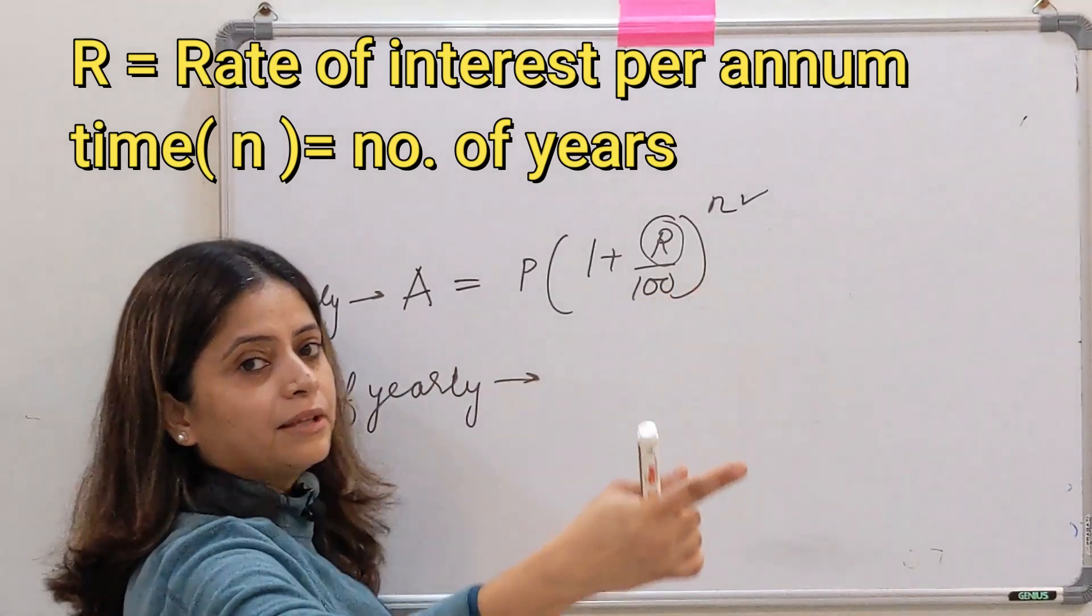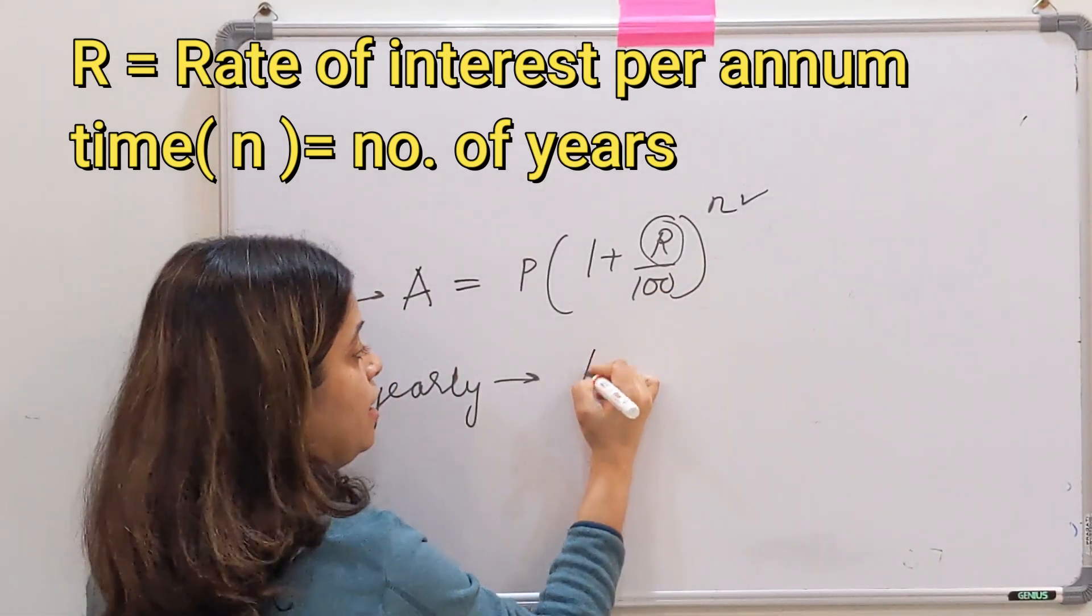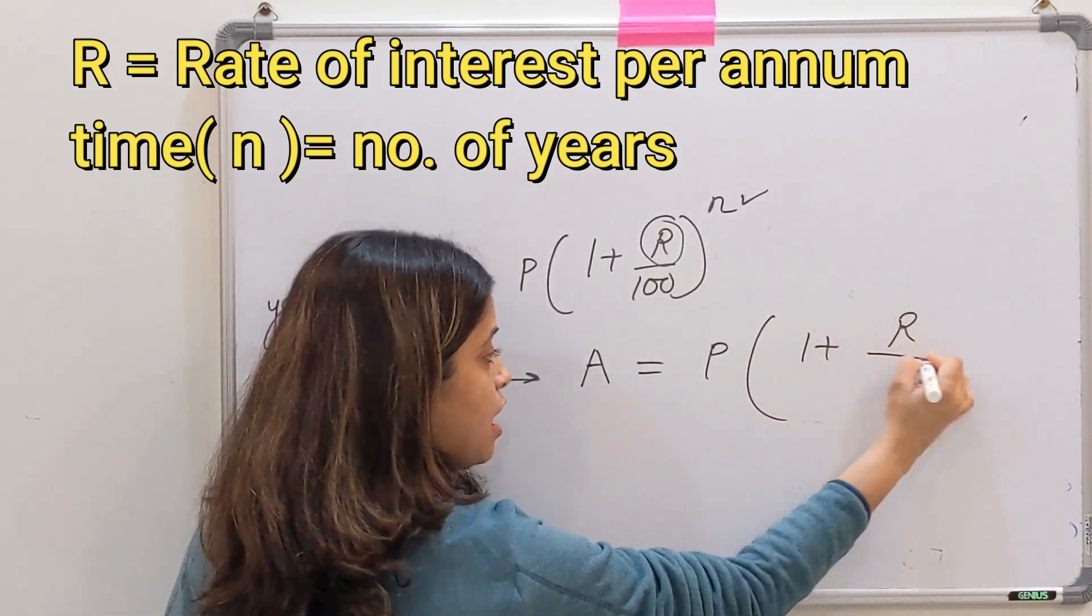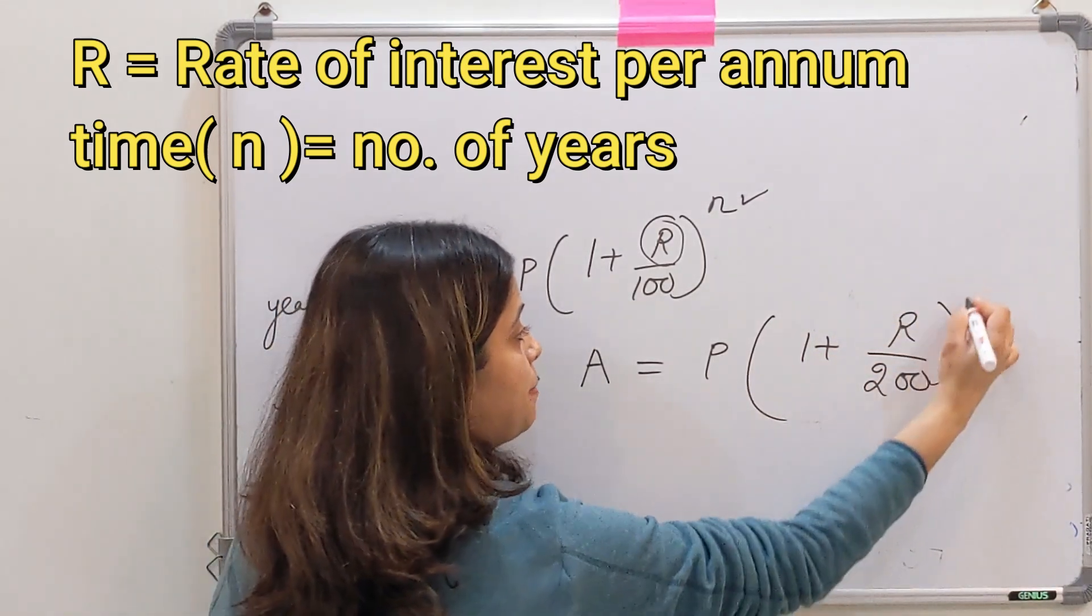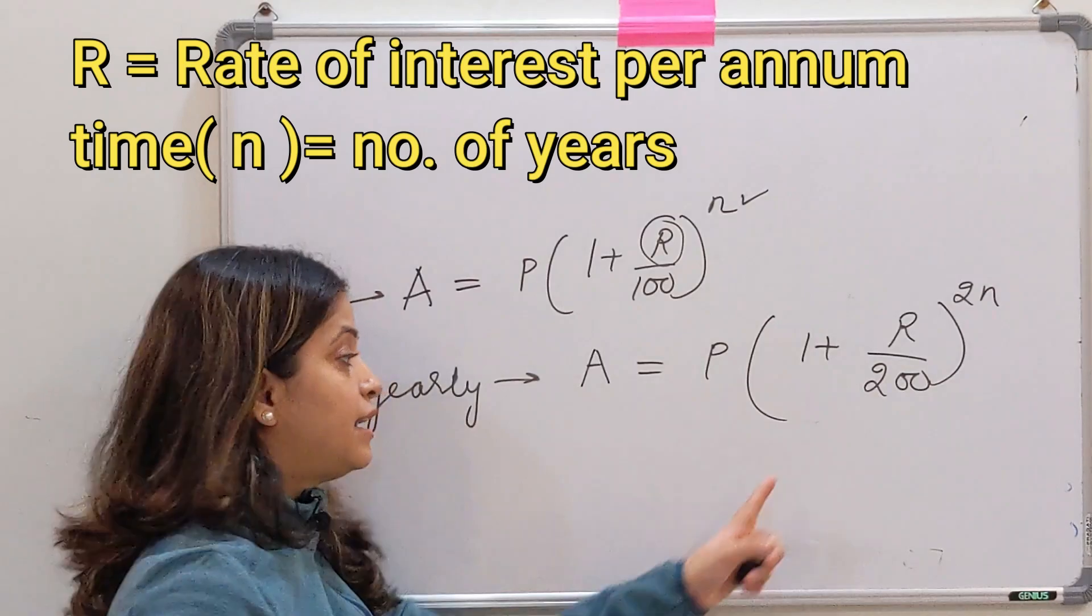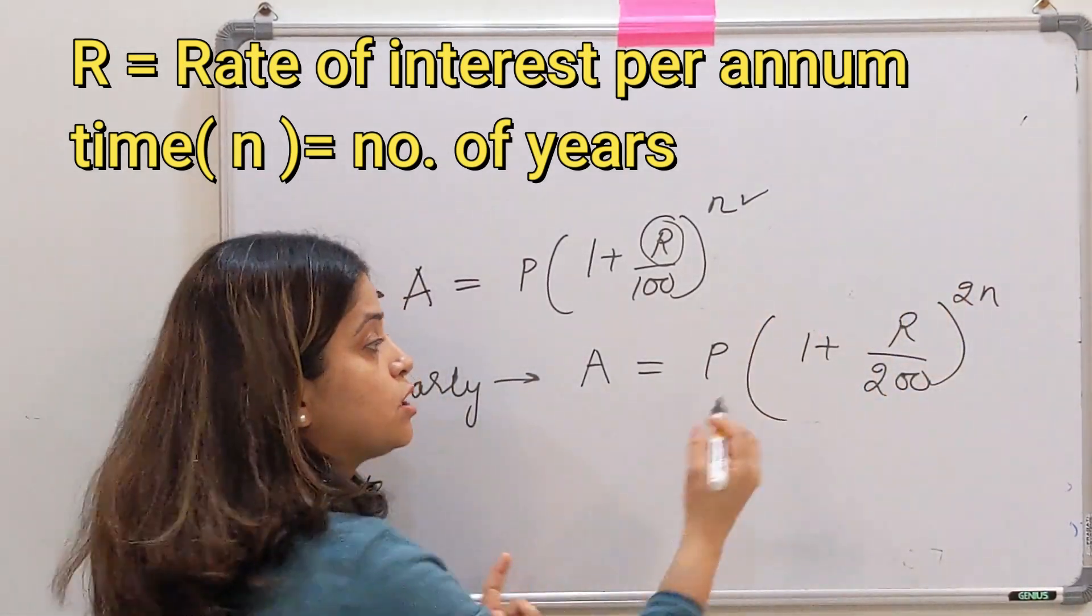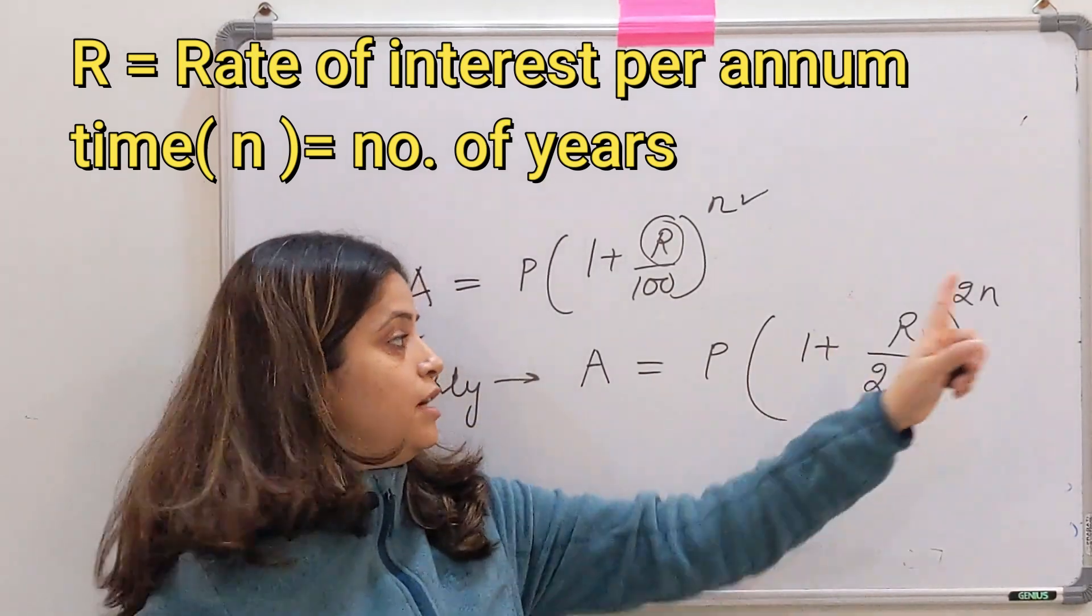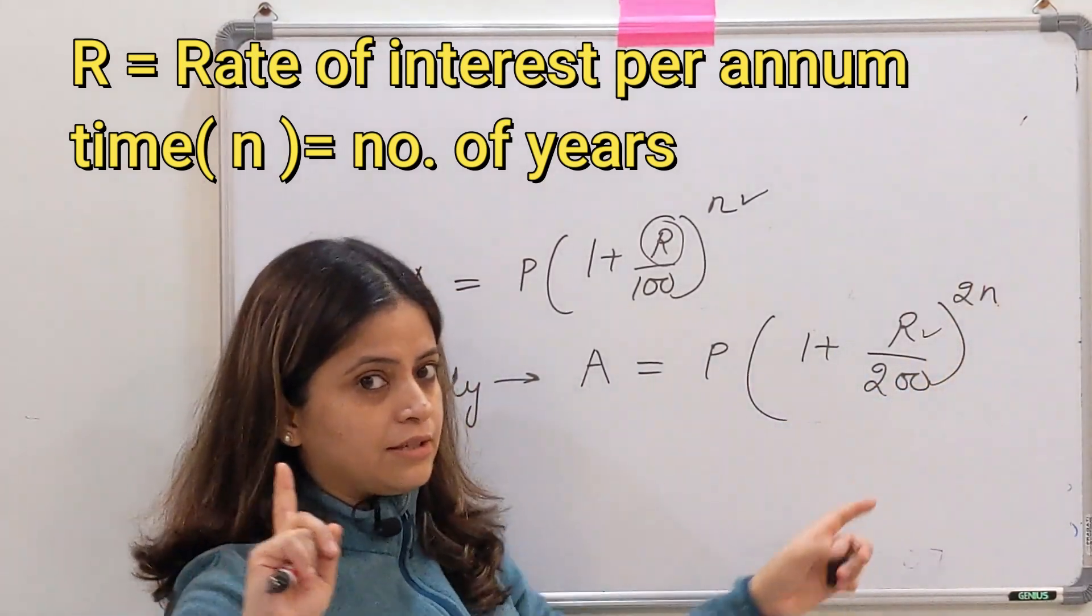मतलब हर 6 महीने बाद interest calculate हो रहा है, तो आपका amount का formula बन जाएगा P into 1 plus R upon 200 to the power 2n. क्या याद रखना है: 2 and 2. Here also, this is same rate of interest per annum, n is also number of years.